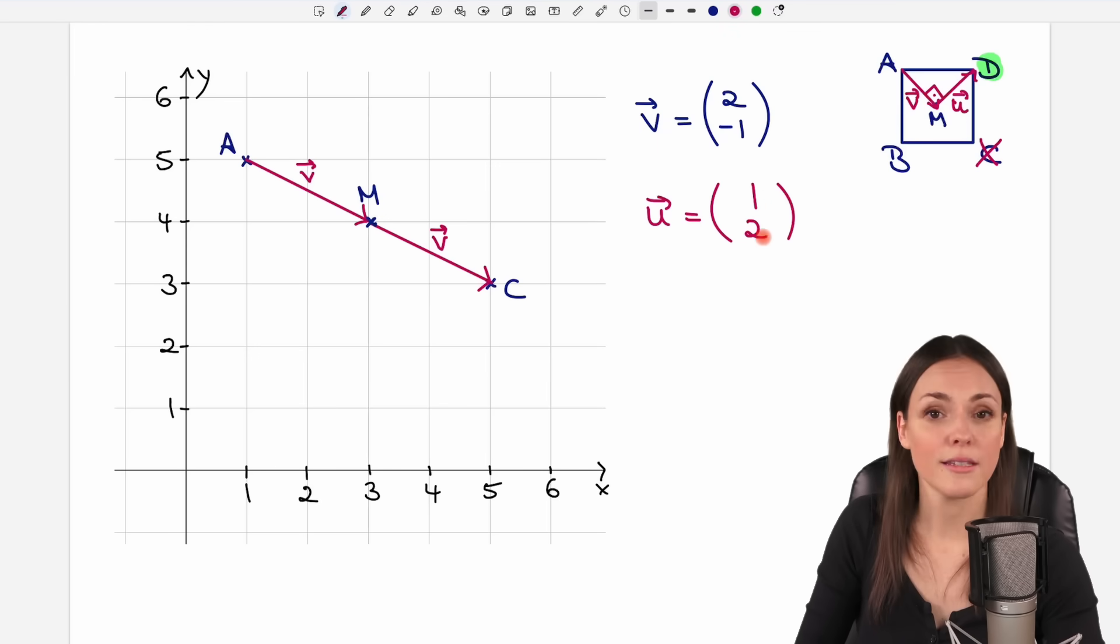Okay, but this is the case here. And now we have our u. So from the center of our square, we would use u to have our perpendicular vector here, and to get to the point D then.